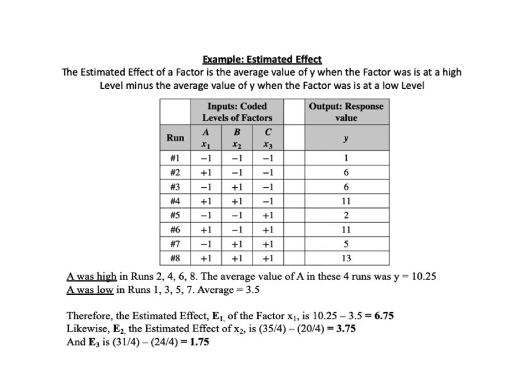Likewise, the estimated effect of X sub 2 is 35 divided by 4 minus 20 divided by 4 equals 3.75. And E sub 3 is 31 divided by 4 minus 24 divided by 4 equals 1.75. Just a note on terminology. The estimated effect of individual factors, as opposed to the interactions between factors, are called main effects. These are all main effects so far. We will discuss interactions later.